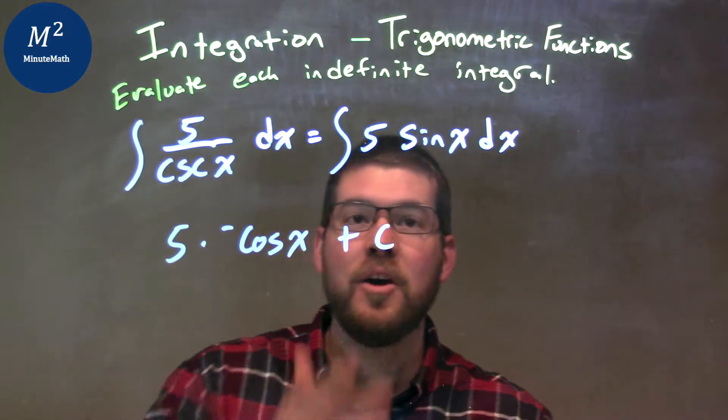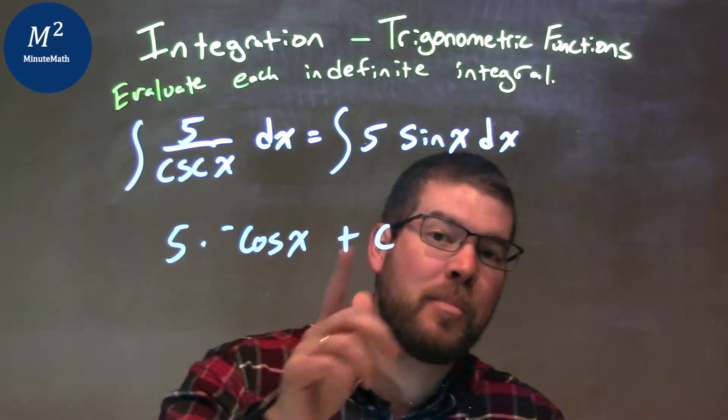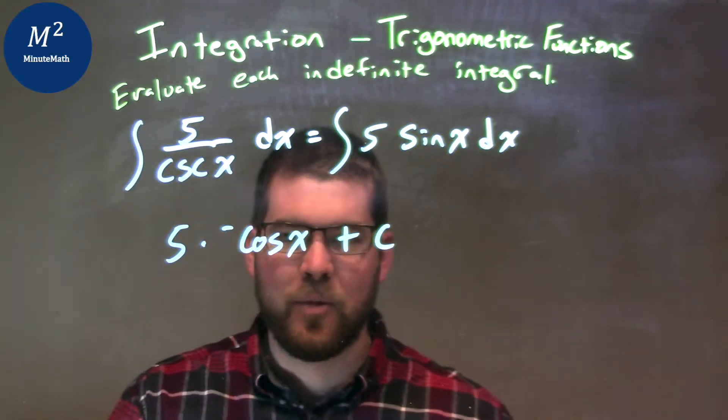Don't forget, it's plus c right there. So, sine of x and negative cosine of x, bring the constant out front, and then don't forget the plus c, that constant.